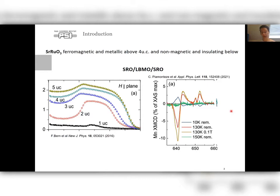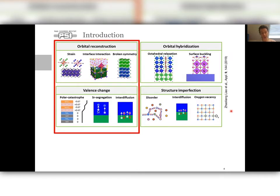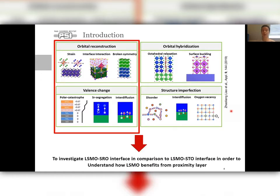I'll go back to XMCD data later to show my own results. Different possible explanations of magnetic dead layer effects have been discussed in previous studies. In this work, we aim to investigate the link between charge transfer and orbital reconstruction at LSMO SRO interface in comparison to a single LSMO layer, to understand how LSMO benefits from proximity layer.